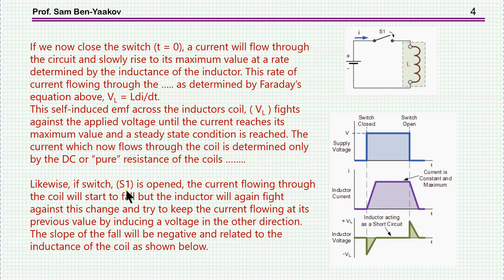Likewise, if the switch S1 is open, that is this one, open, not conducting, the current flowing through the coil will start to fall. But the inductor will again fight against this change and try to keep the current flowing at its previous value by inducing a voltage in the other direction. The slope of the fall will be negative and related to the inductance of the coil as shown below.